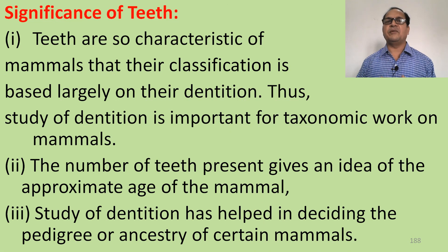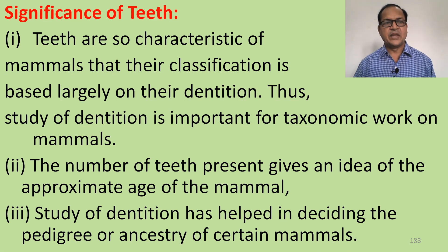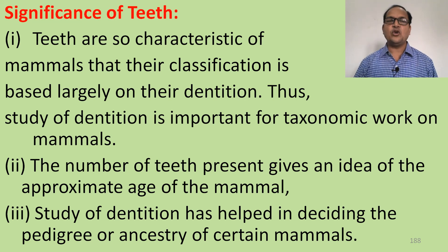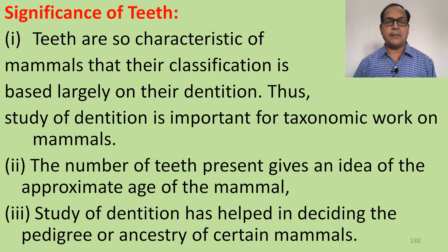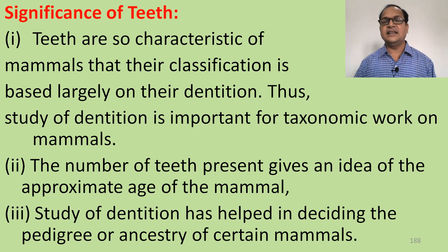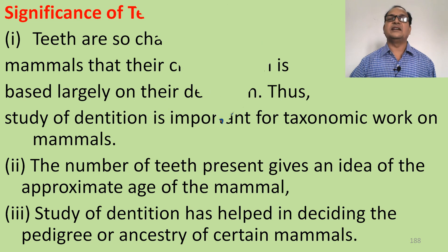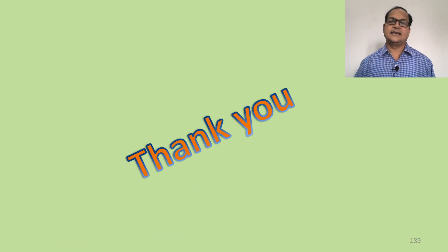Regarding the significance of teeth: teeth are so characteristic of mammals that their classification is largely based on dentition. The study of dentition is therefore important for taxonomic work on mammals. The number of teeth present gives an idea of the approximate age of a mammal. The study of dentition also helps in deciding pedigree analysis and the ancestry of certain mammals. This concludes the topic of dentition in mammals — thank you very much.